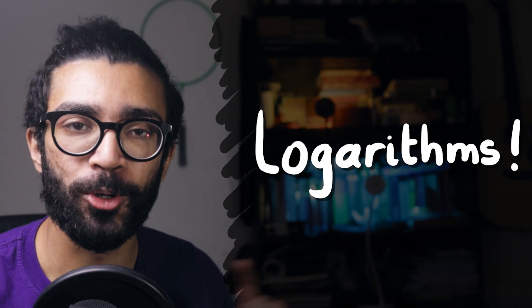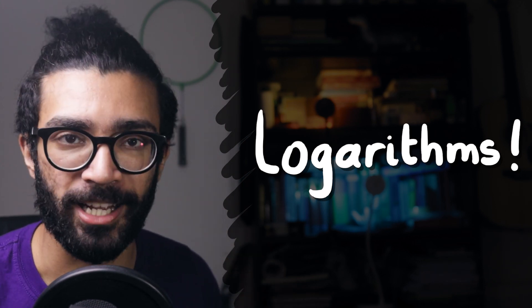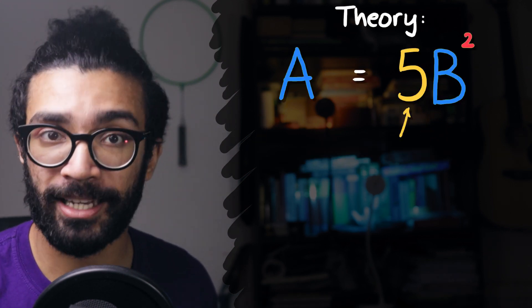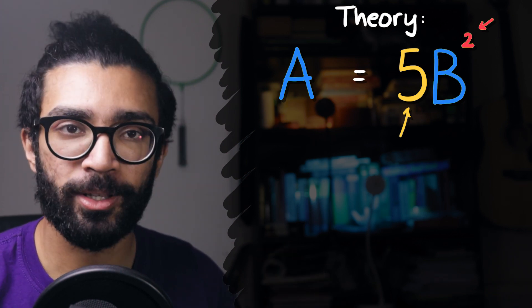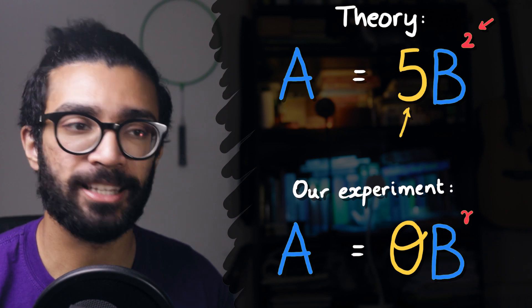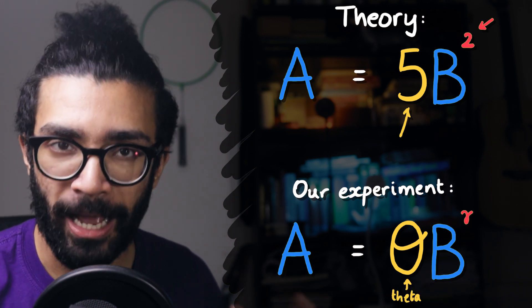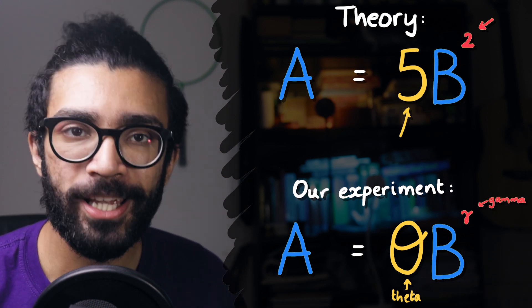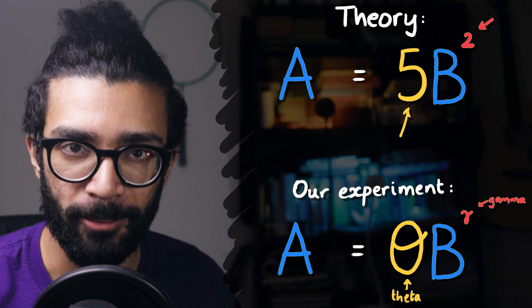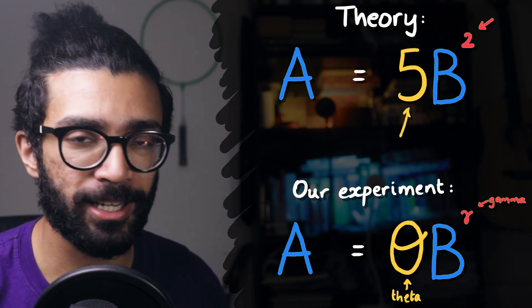Before we go any further, if you're not familiar with logarithms, there'll be some resources in the description below. Definitely do check those out. Remember that we're trying to verify what the values of the proportionality constant and the power are. Theory tells us one thing, but it may or may not be true. So let's just say that the proportionality constant that we'll find from the data that we've gathered is theta, and let's say that the power that we'll find is gamma. We are verifying the relationship A is equal to theta B to the power of gamma. By the way, hopefully the colours will be helpful in tracking what each term means, so keep an eye out on those.